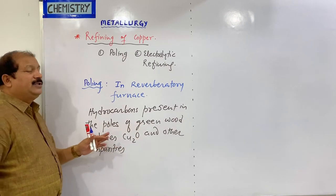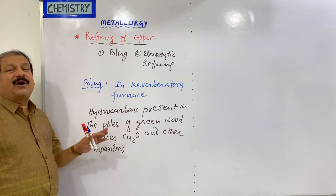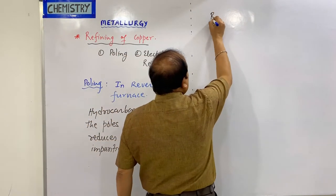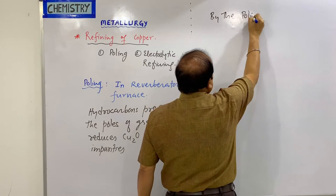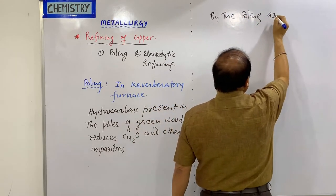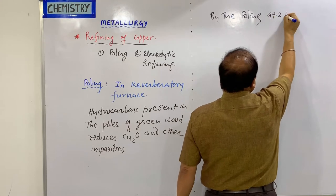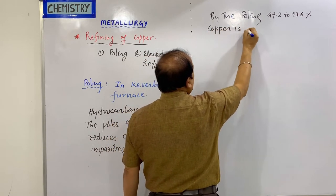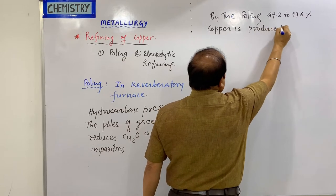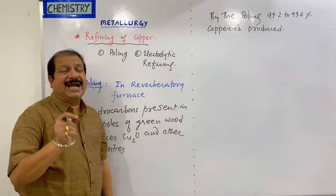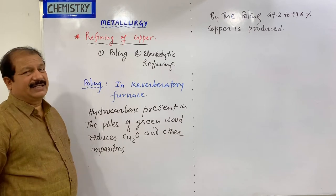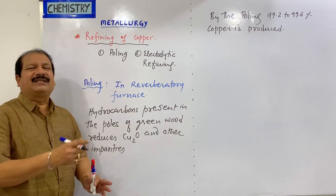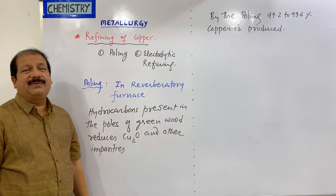So copper is produced that is 99.2% to 99.6% pure by the poling process. Earlier, blister copper had 2% impurity (98% pure), and after poling the purity is 99.2% to 99.6%.